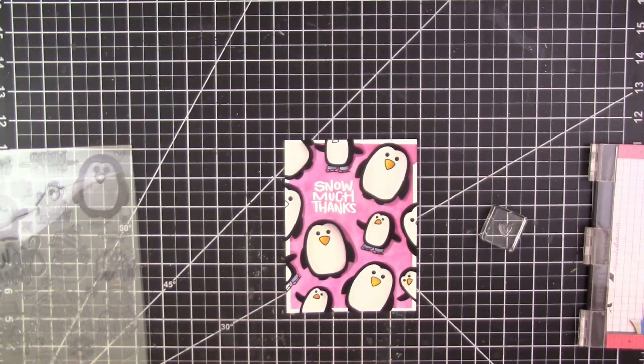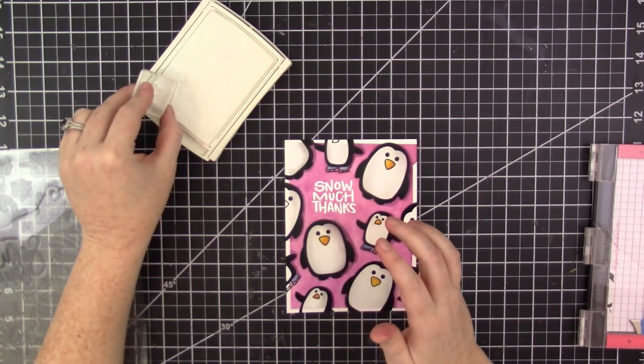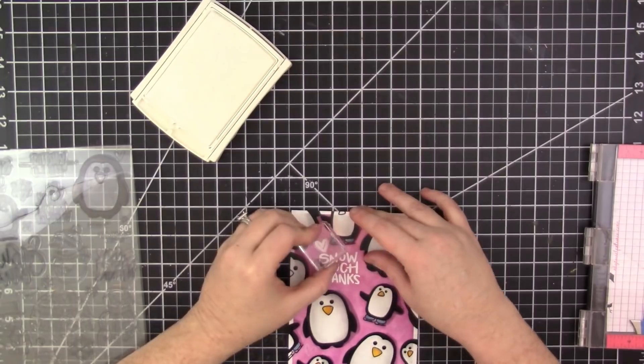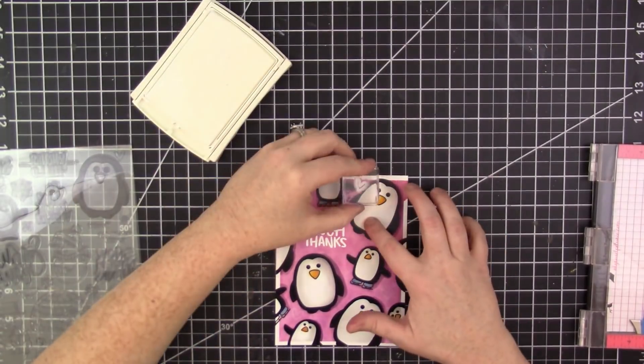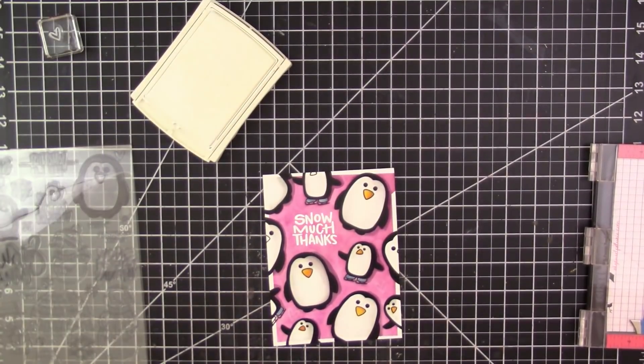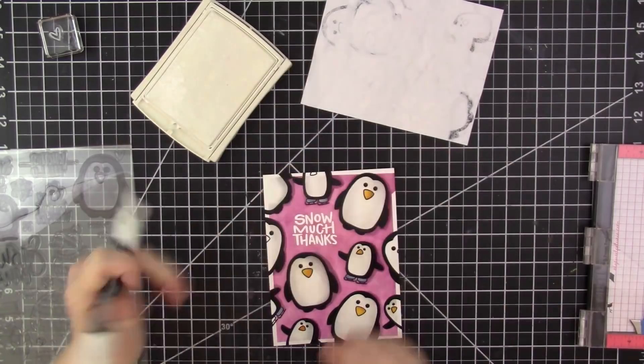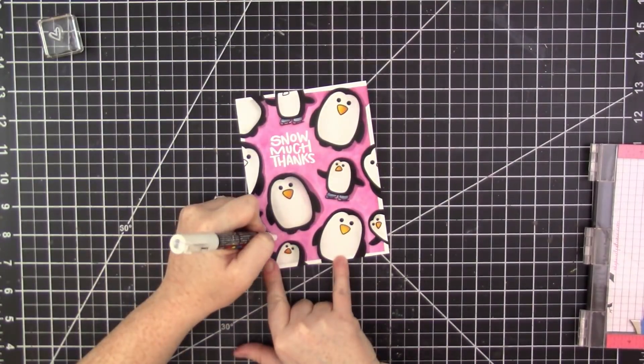And then I'm gonna fill in some of the gaps between the penguins with smaller stamps from the set, so I'm gonna use the heart, the X, and the O. And I'm stamping them in Whisper White pigment ink, but it didn't really show up as bright as I wanted it to.